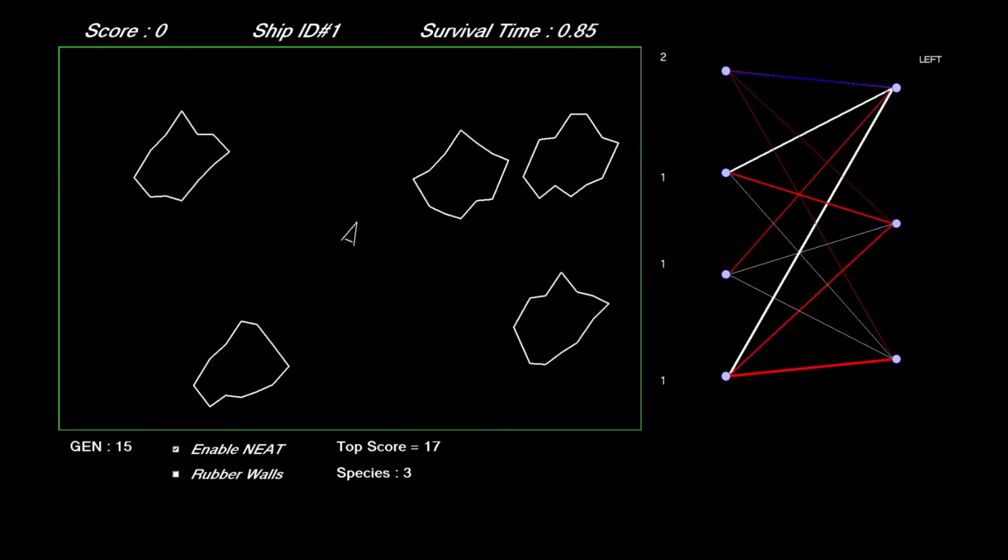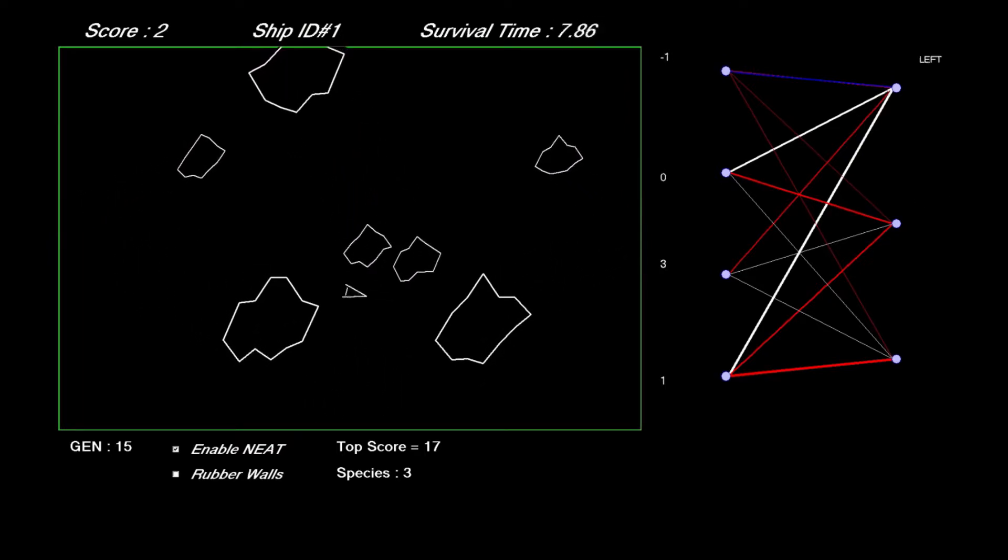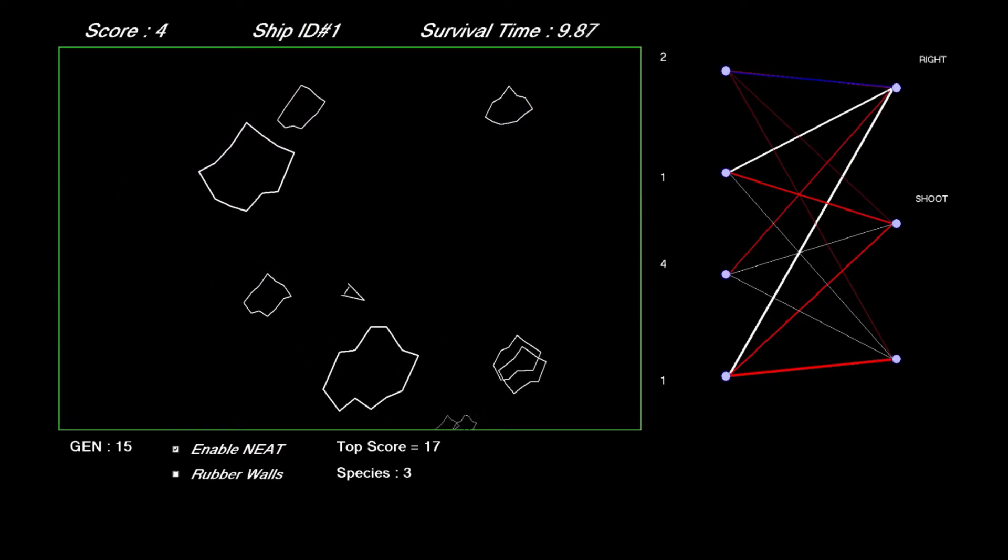By Generation 9, a recurrent connection appeared between the output node which governs steering and input node 1 which is the direction to the nearest asteroid. It's a fully connected network on startup with no hidden nodes.